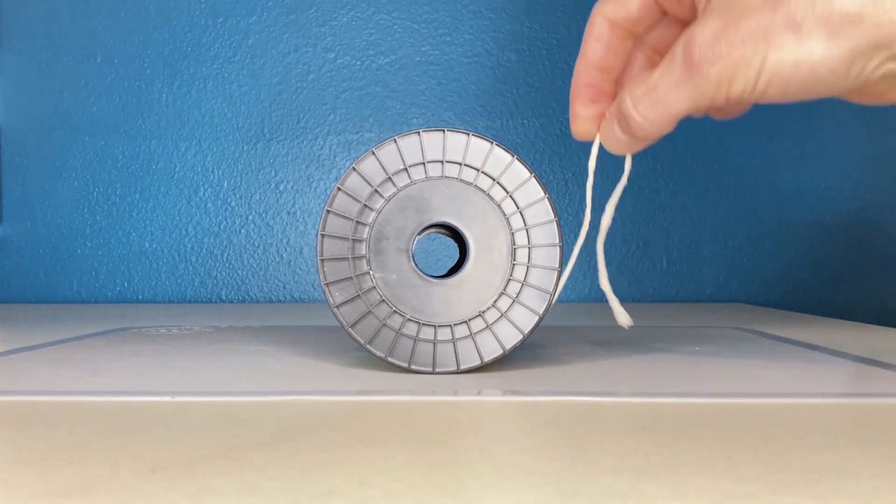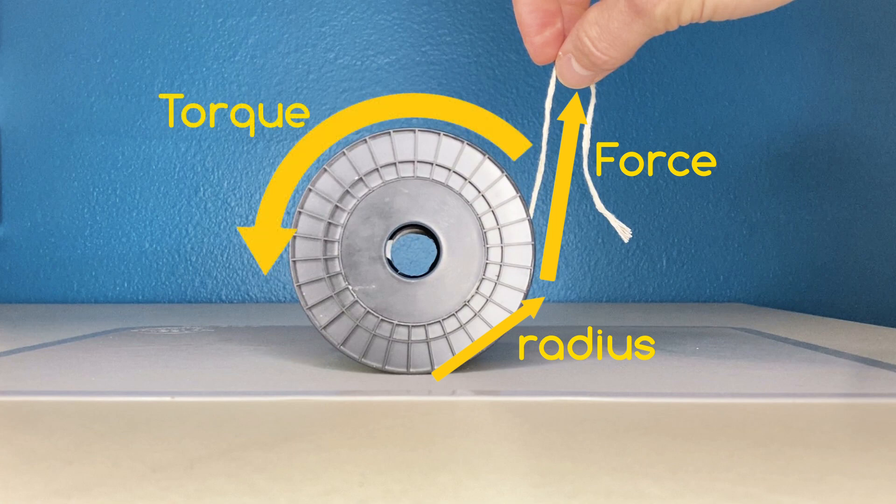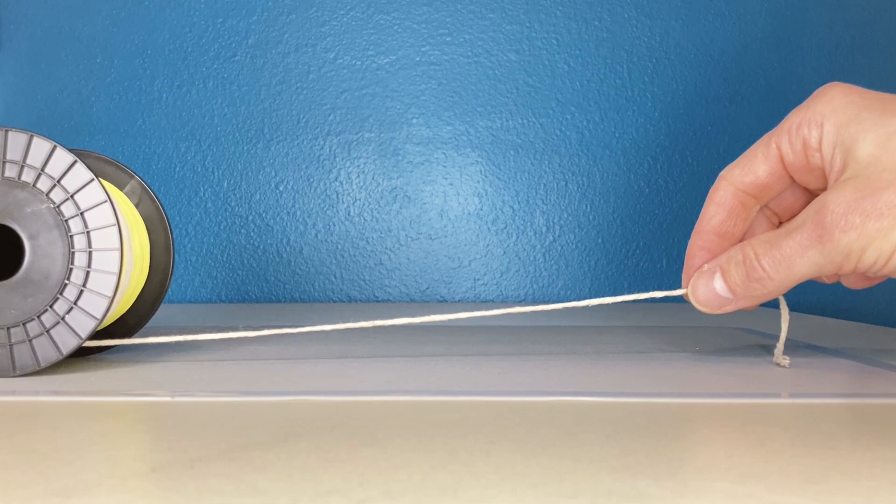So, when I pull upward on this spool, it produces a torque that's counterclockwise on the spool, causing it to move to the left or counterclockwise.